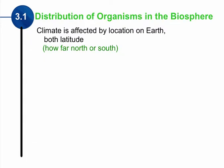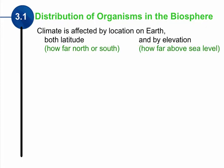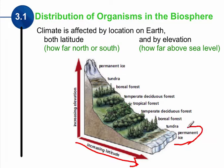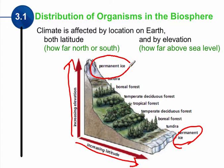Climate is actually affected by location on earth — how far north and south we are, called latitude, how far from the equator we are, but also by elevation, how high above sea level you are. As we increase in latitude, getting closer and closer to one of the poles whether north or south, the temperature decreases and we get closer to polar or permanent ice. The same applies if we go up in elevation — the higher we go, the colder the temperature gets, and we get closer to permanent ice.